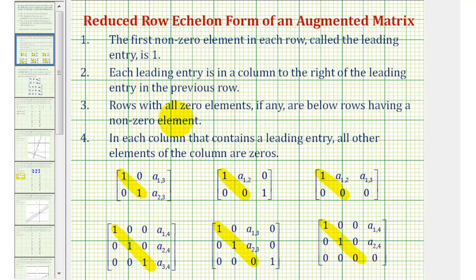Number three, rows with all zero elements, if any, are below rows having a non-zero element. And then number four, in each column that contains a leading entry or one, all their elements in the column are zeros.